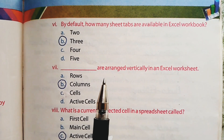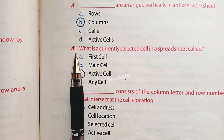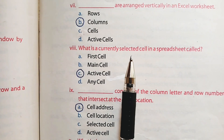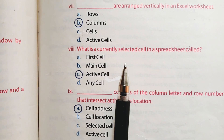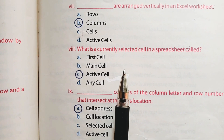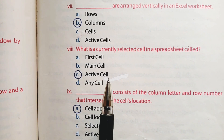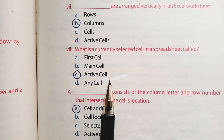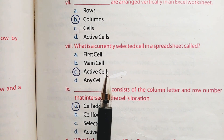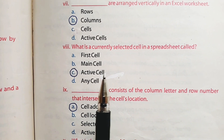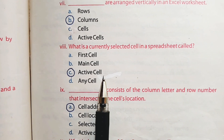Part number 8: What is a currently selected cell in a spreadsheet called? The currently selected cell is called the active cell. Option C is the right option. The active cell's address is displayed in the Name Box, and another way to identify the active cell is the black border that appears around it.